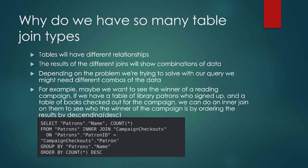Let's say we wanted to look at the winner of a reading competition. If we have a table of library patrons who signed up for the competition and a table of books that were checked out for the campaign, we could do an inner join and see who is the winner by ordering the results. We want to look at the patrons and the campaign checkouts so that we can see who checked out the most books.